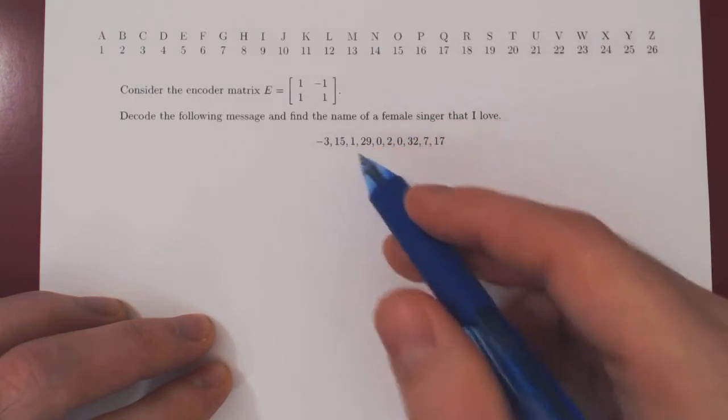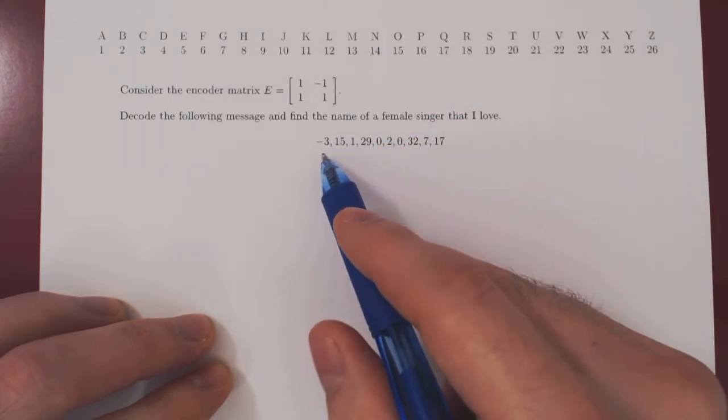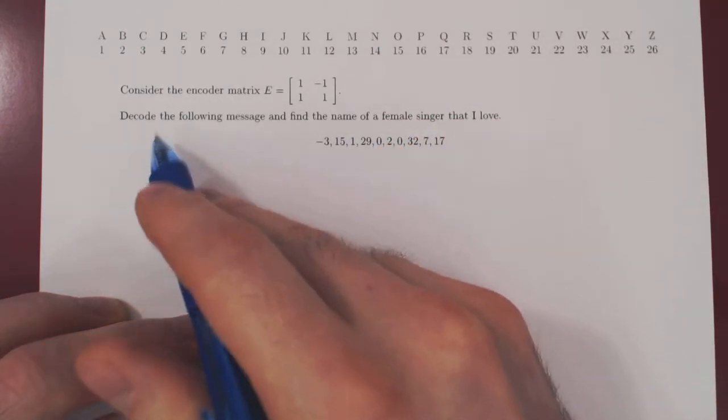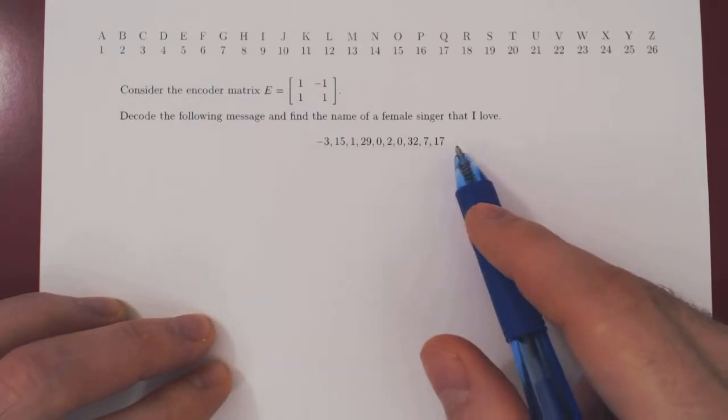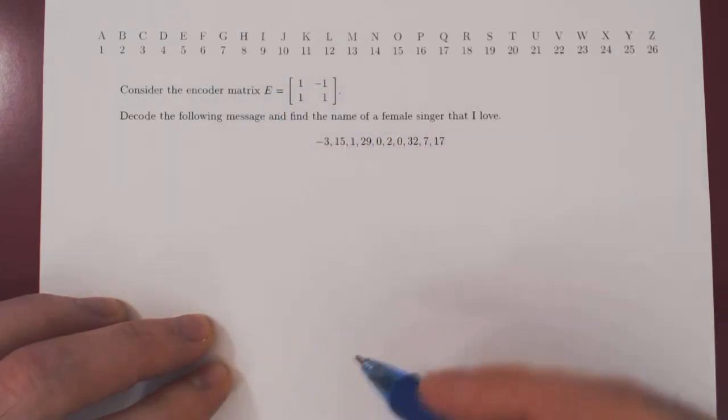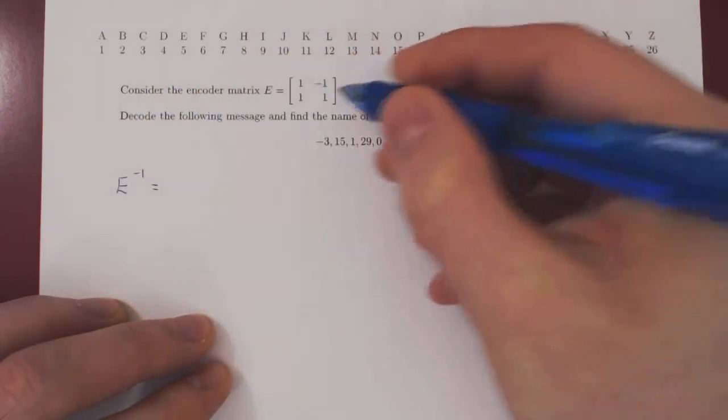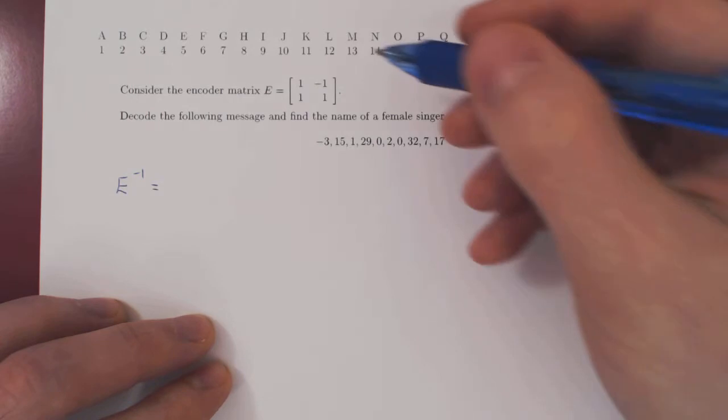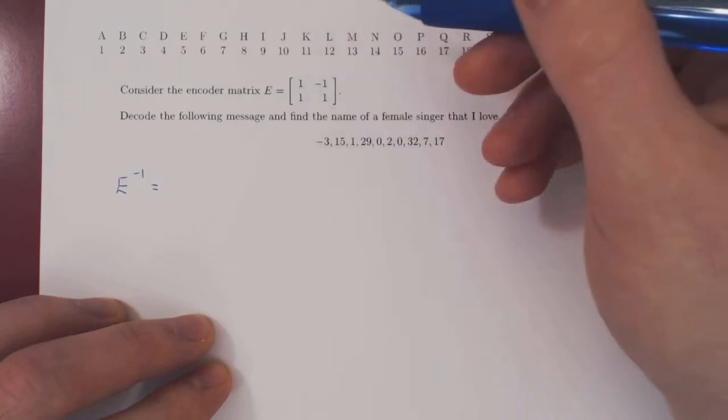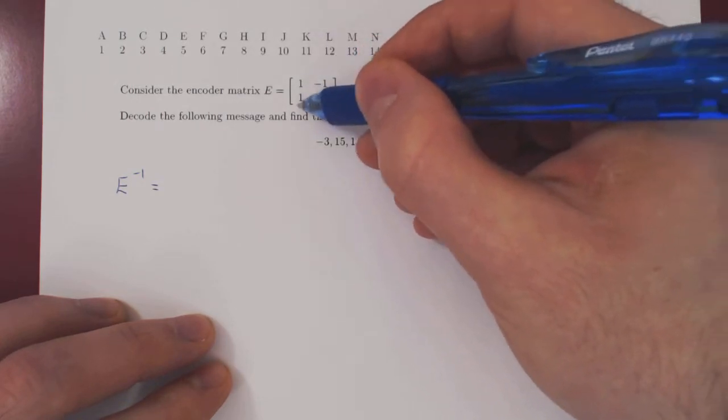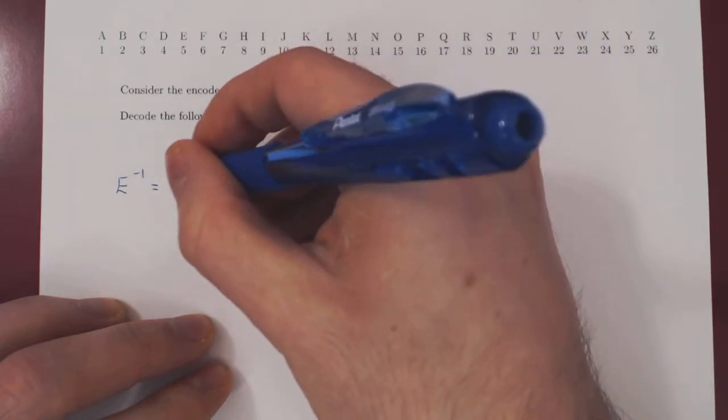To decode, and we are told that this message is encoded because we have to decode it, well, to decode the message we need the inverse of the encoder matrix. So let's find the inverse. As is a 2 by 2 matrix, the inverse is really easy to find. So 1 over AD minus BC, 1 minus negative 1 is 2, so it's 1 half.